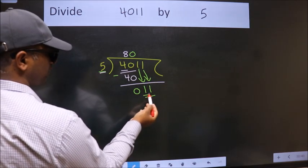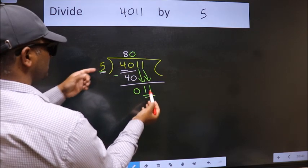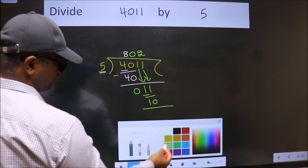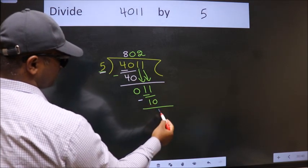A number close to 11 in the 5 table is 5 times 2 is 10. Now we subtract. We get 1.